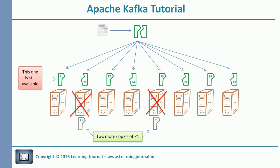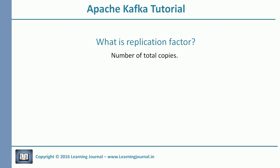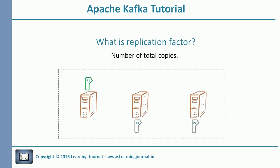There is a particular term used for making multiple copies — we call it replication factor. So, if I say replication factor is three, that means I am maintaining three copies of my partition. If I say replication factor is two, that means we are keeping two copies of a partition. Three is a reasonable number for replication factor. You can even set it higher if your data is super-critical or you are using cheap machines.